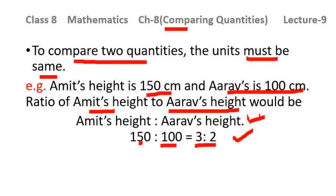Here in this example, the unit of both is the same — both are given in centimeter. So we need not convert any of these into any other unit. Same units were there, so we can easily compare. If units are not same, then you need to make the units the same. You can convert either meters into kilometers or kilometers into meters — that is up to you.